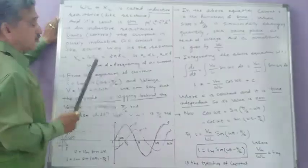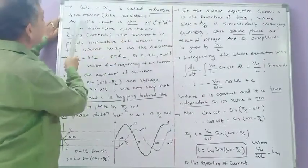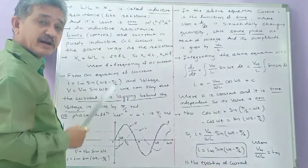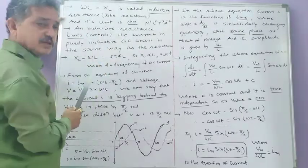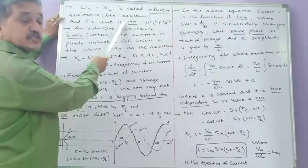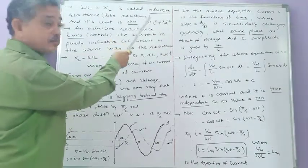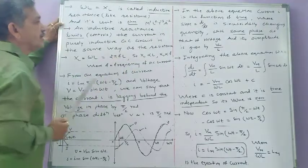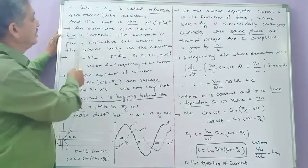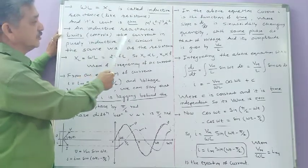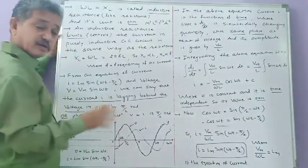Here ωL is called inductive reactance, denoted XL. Inductive reactance acts like resistance but for an inductor. Its unit is ohm, and its dimensional formula is the same as that of resistance: M¹L²T⁻³A⁻². An inductive reactance limits and controls the current in a purely inductive AC circuit in the same way as resistance controls current in a resistive AC circuit.